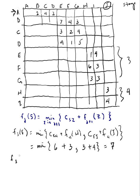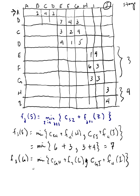The last node at stage 3 is G. F3(G) equals the min of: cost G to H plus F4(H), and cost G to I plus F4(I). G to H is 3, plus F4(H) of 3 equals 6. G to I is 3, plus F4(I) of 4 equals 7. So F3(G) equals 6.